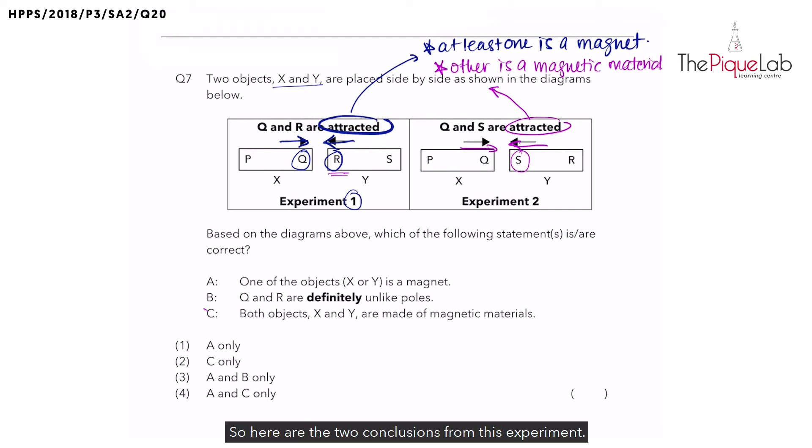So here are the two conclusions from this experiment. Number one: only one of the objects is a magnet. Number two: the other one is a magnetic material. So let's look at the statements now and find out which statements are correct. Statement A: One of the objects X or Y is a magnet. Yes, this was exactly what we have concluded earlier, so this is correct.